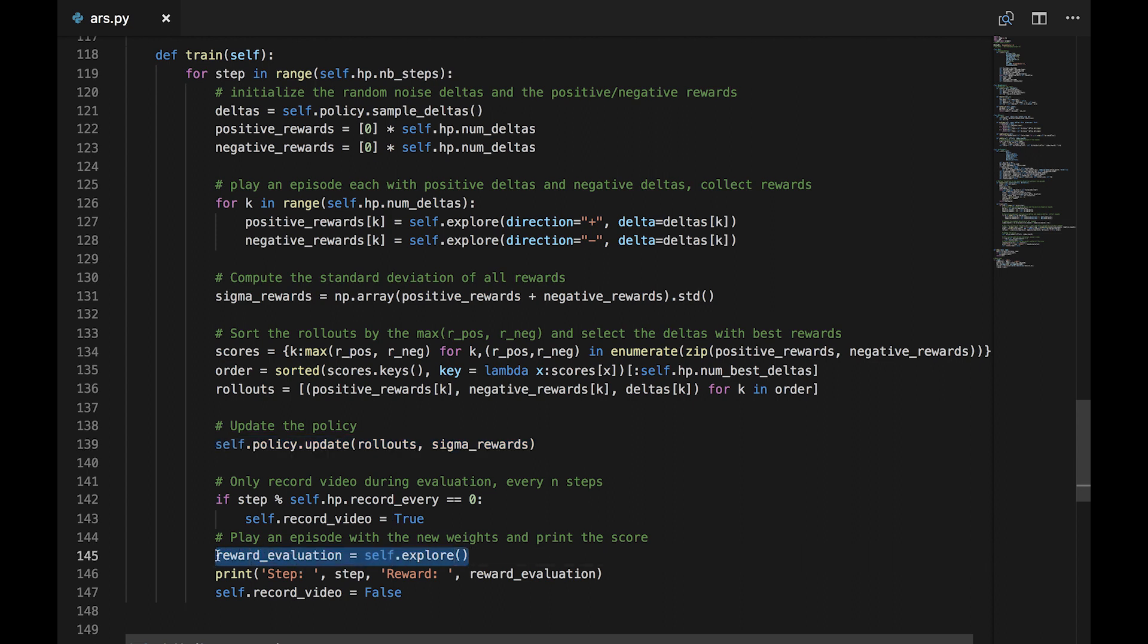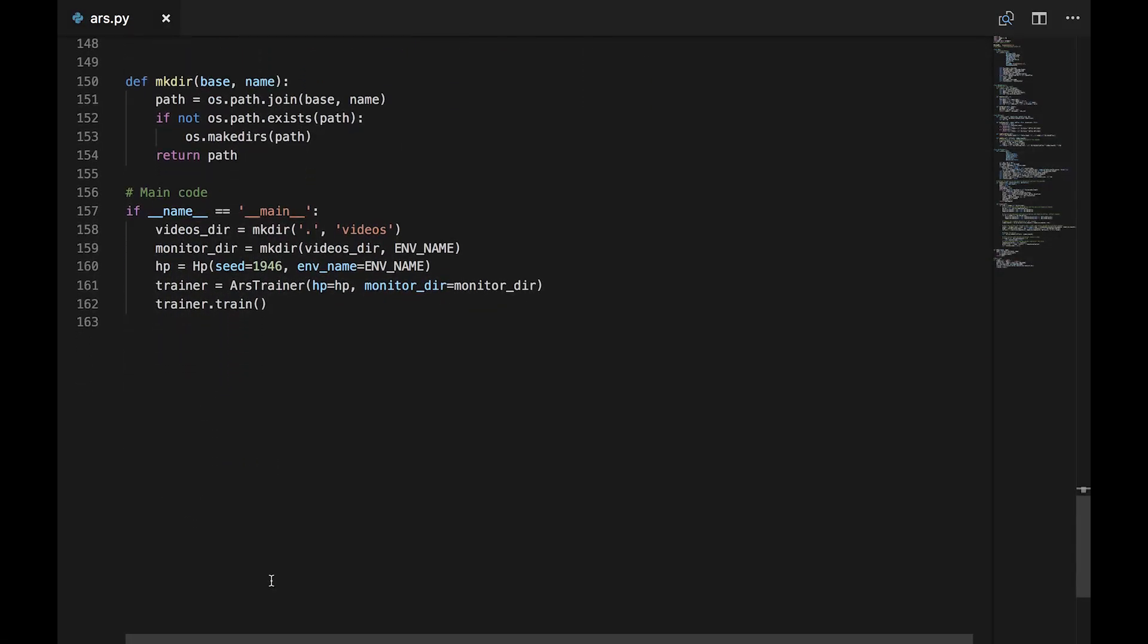Alright, now let's take a look at the main code. First, we create a directory to store the videos. Then we customize any hyperparameters we want to customize. We create an instance of the ARSTrainer class. And finally, we run the train function.